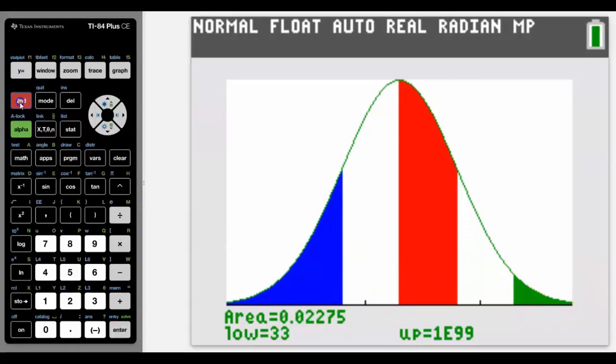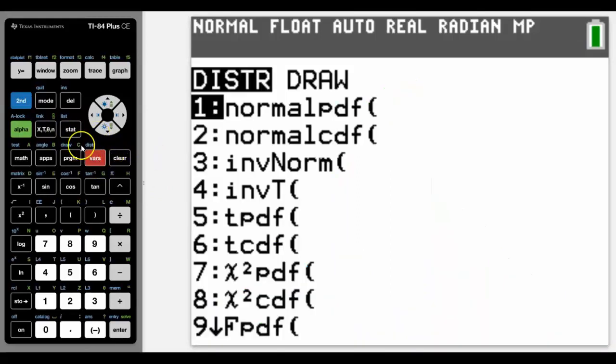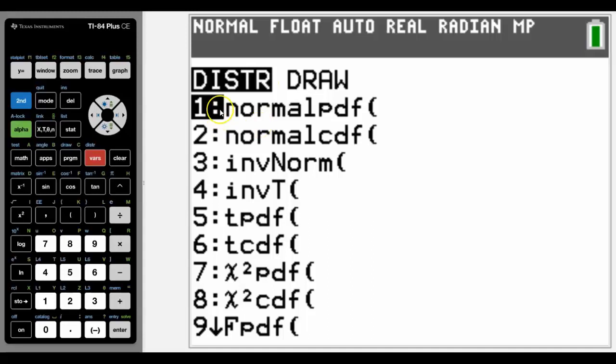So where do we find distribution? That's in the distribution button here and we can see that there are three main buttons that we are going to use. Over here we are going to use the draw in a minute to get a graph like I showed you a minute ago, but these would be the three that we would use.